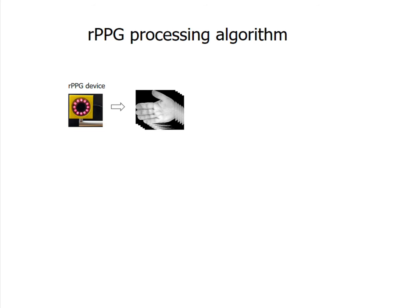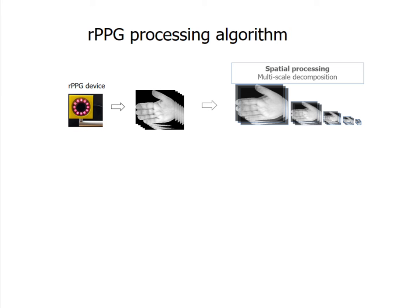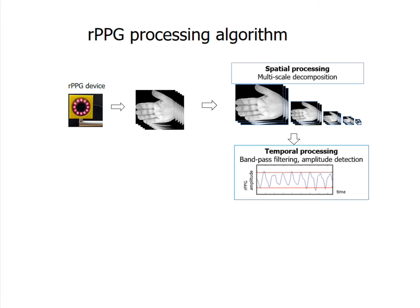During acquisition, video images are received from the video camera and stored in computer memory. Each video frame is then decomposed into different spatial frequency bands using multiscale pyramid decomposition. The goal of spatial processing is to increase the signal-to-noise ratio by pooling multiple pixels. The next step is temporal filtering of the image dataset, where pixel intensity changes from frame to frame due to blood volume changes. To extract the pulsatile signal, a band-pass filter with a heartbeat frequency range was applied for all pyramid levels and all image pixels.